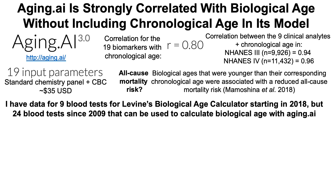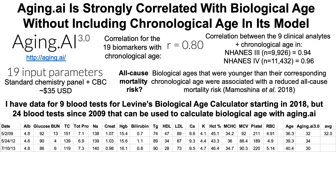I have data for nine blood tests for Levine's biological age calculator starting in 2018, when I started including C-reactive protein. But I have aging.ai data for 24 blood tests since 2009. Starting around 2005, I was only measuring about once a year at a yearly physical and recording whatever data they gave me in an Excel file. In some cases from 2005 I have all 19 variables, but in many others I don't. I have a full set of 19 blood biomarkers in 2009, 2012, and 2013. I've included all the data on the list so anyone can double-check my numbers at aging.ai.